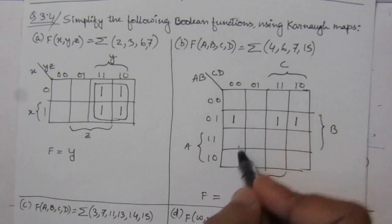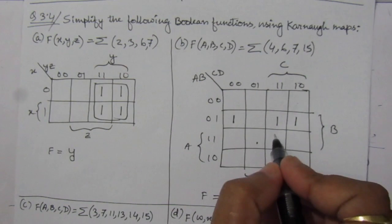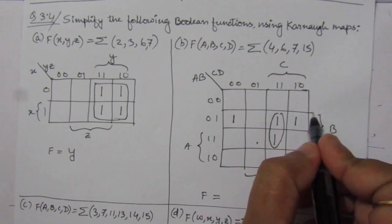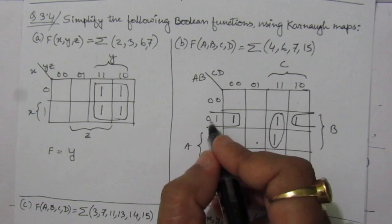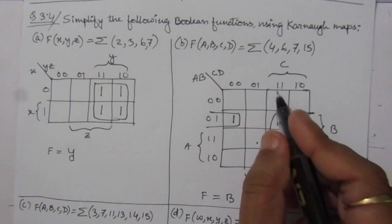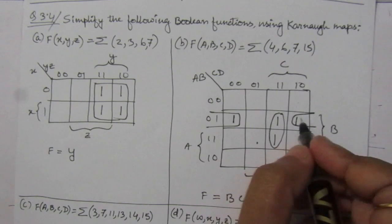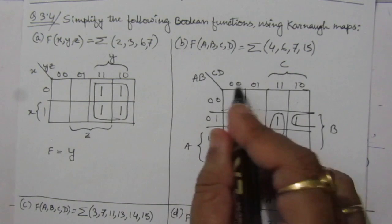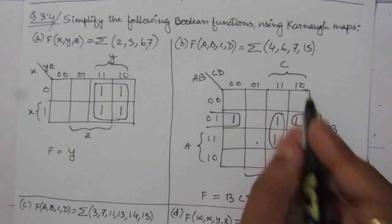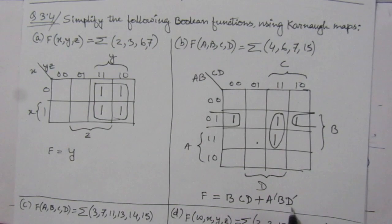Combining the groups on the K-map, we get two terms. For the first group, A is both zero and one so it is discarded; we have B, and C and D are both one, giving BCD. For the second combination, A is zero so we get A-bar, B is one giving B, C is discarded, and D is zero giving D-bar. The simplified boolean expression is F = BCD + A'BD'.